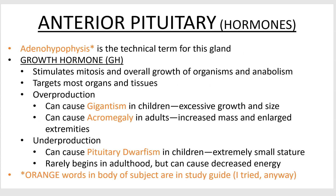Now let's go to the anterior pituitary, because it's the glandular portion of the pituitary. It makes its own hormones and we will go over six of them here. Six may seem like a lot, but it does many other things as well. This portion is called the adenohypophysis.